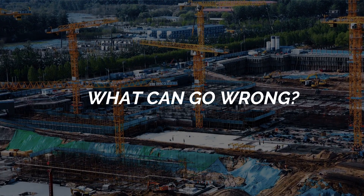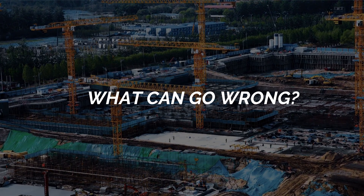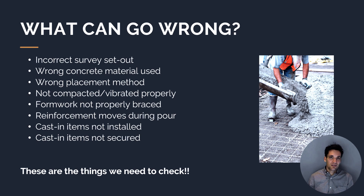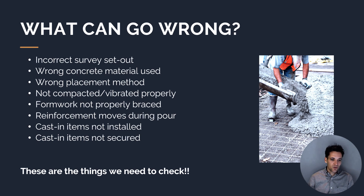You want to create a big list of everything that could possibly go wrong for that specific construction activity, and then check that you're not going to make those mistakes. For example, with concrete works: you could incorrectly set out the survey, use the wrong concrete material, use the wrong placement method, fail to compact or vibrate the concrete properly causing air pockets, use the wrong type of formwork or have it incorrectly braced, have reinforcement move during the pour, miss installing service penetrations, or miss installing cast-in items like bolts.